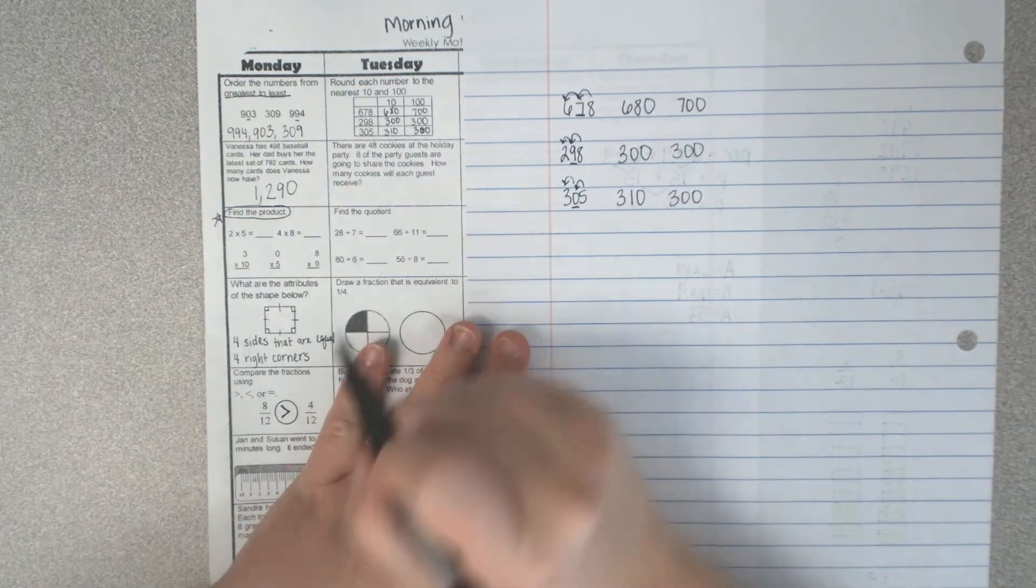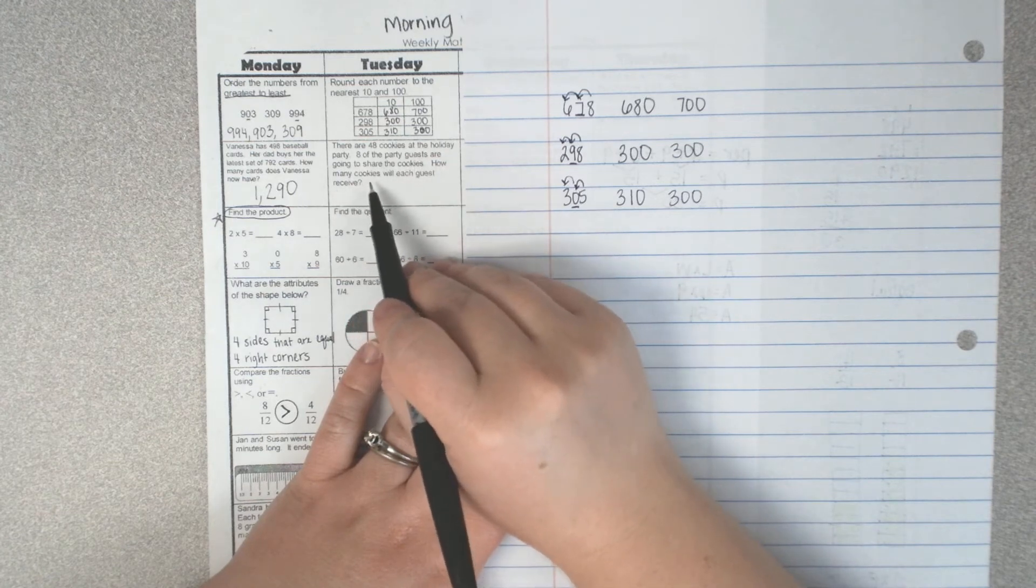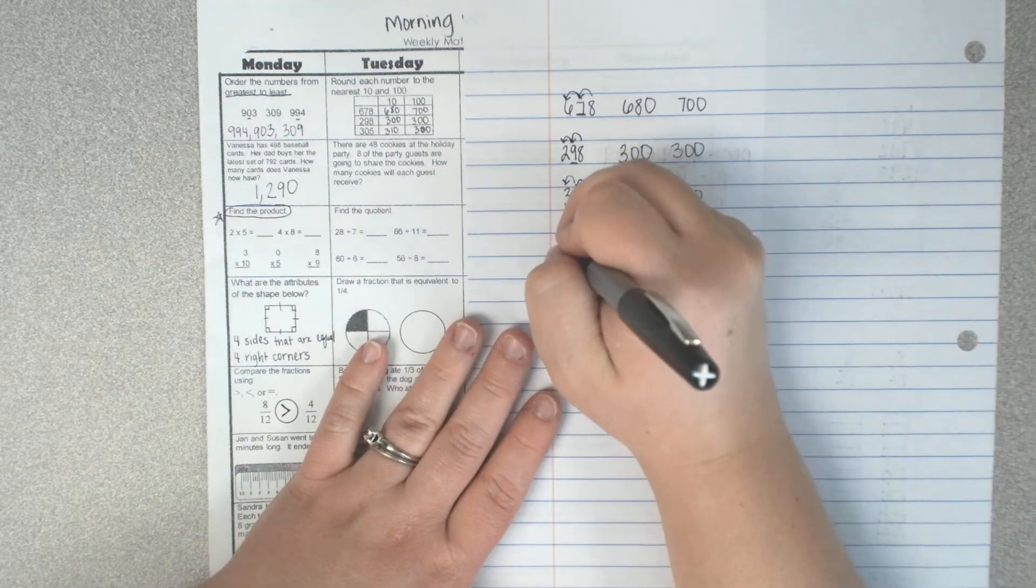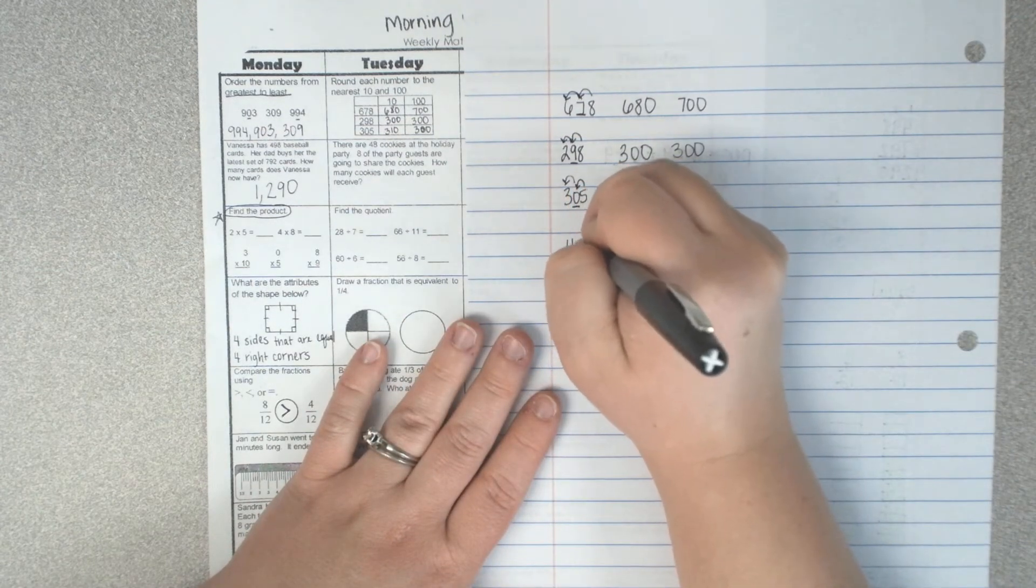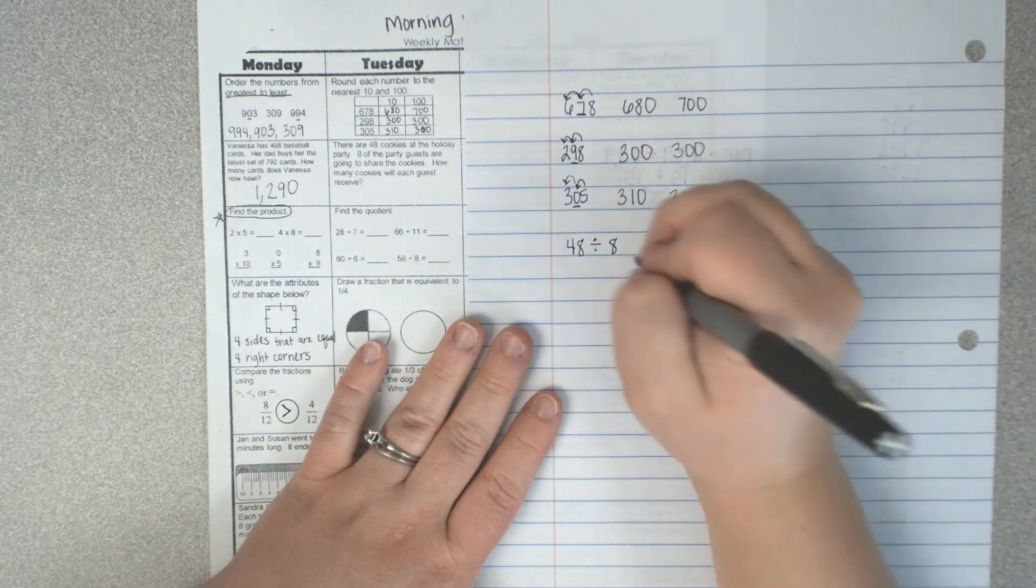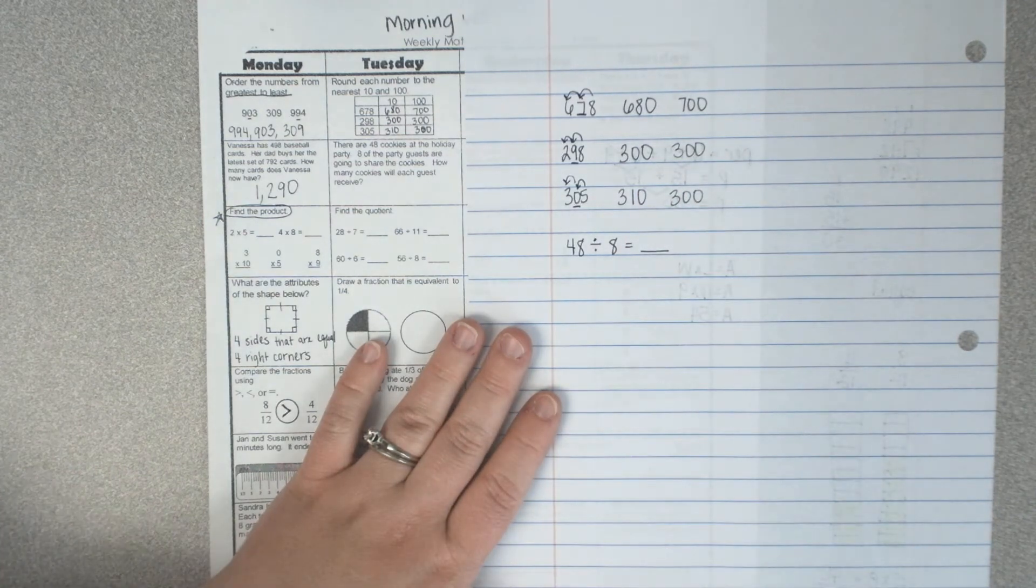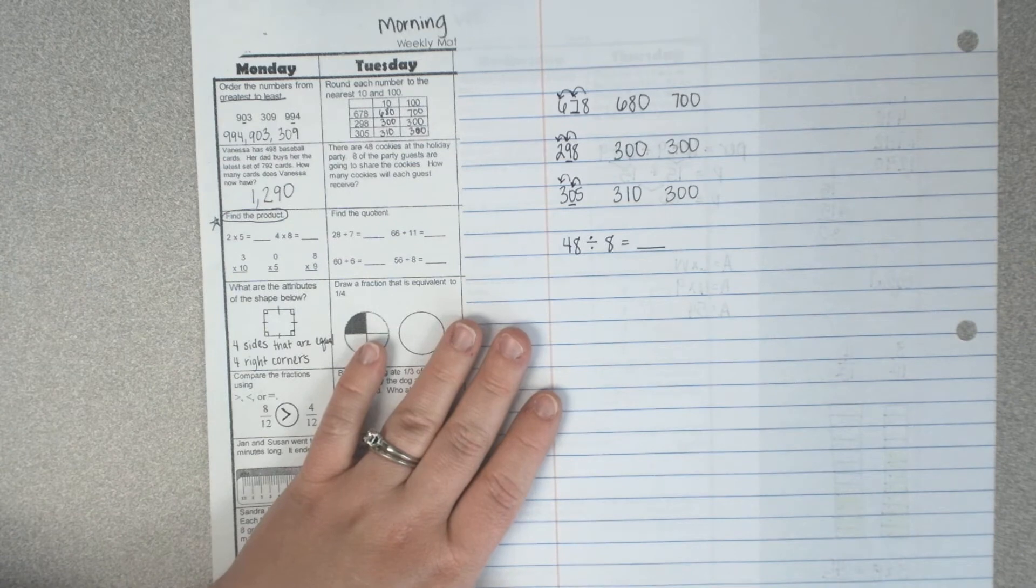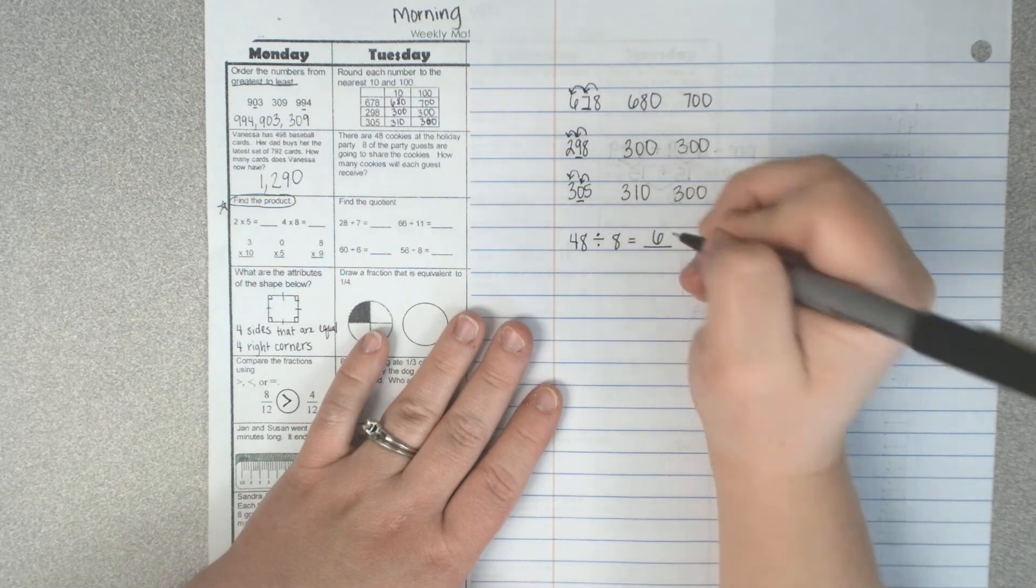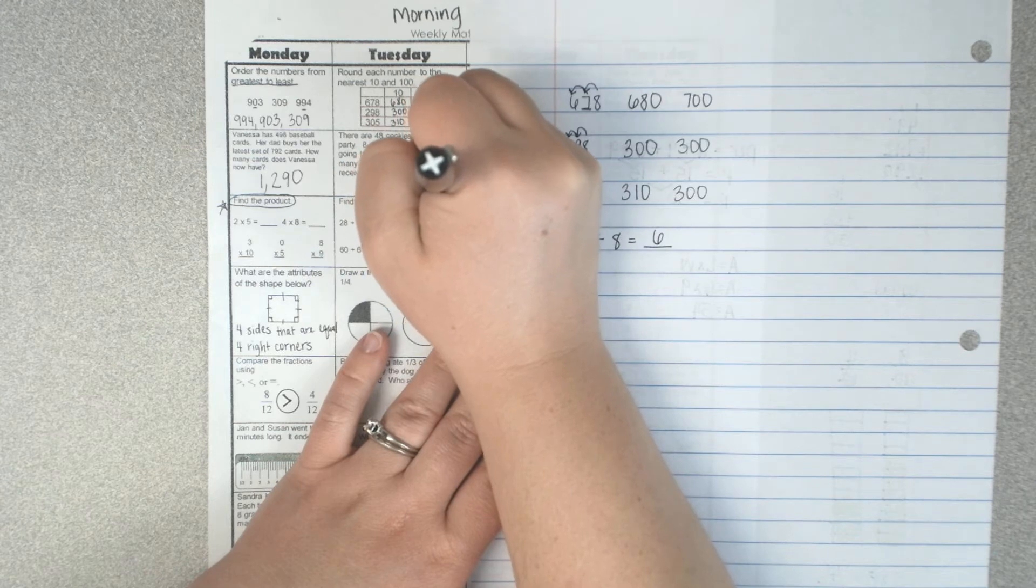So there are 48 cookies at the holiday party. Eight of the party guests are going to share the cookies. How many cookies will each guest receive? So I have 48 total divided by how many guests? Eight. What times eight is 48? Six. So they will each get six cookies.